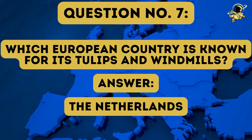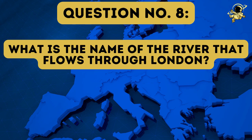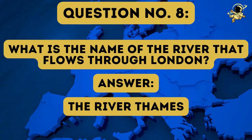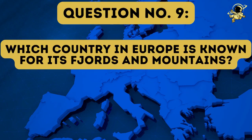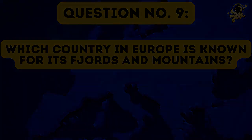And then we come to question number seven: Which European country is known for its tulips and windmills? And the answer to question number seven is the Netherlands. And then we come to question number eight: What is the name of the river that flows through London? And the answer to question number eight is the River Thames.